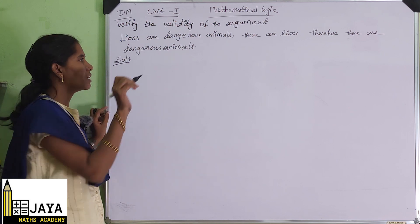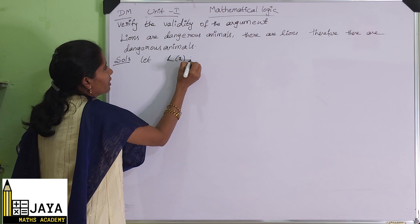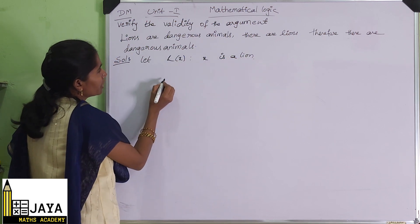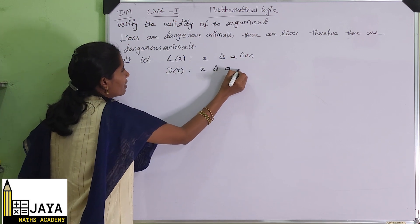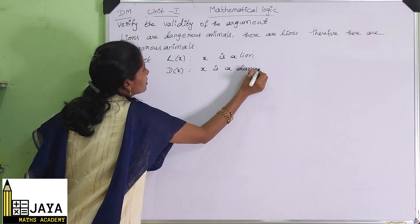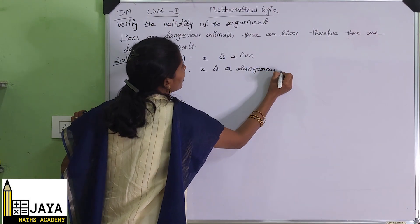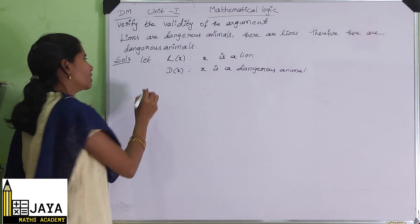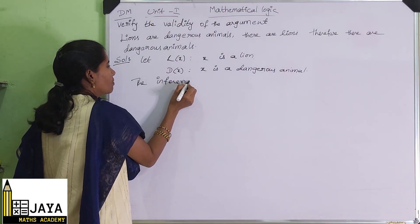We need to check if it is valid or not. So we want to take letter L(x): x is a lion. Next, D(x): x is a dangerous animal. Then the inference pattern we can write.